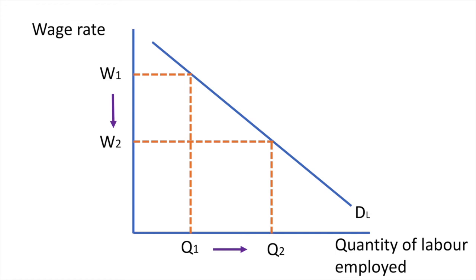In the same way consumers would pay less as their utility diminishes over time, firms receive diminishing returns from additional units of labour, and thus would only be willing to employ more labour at lower wage rates.